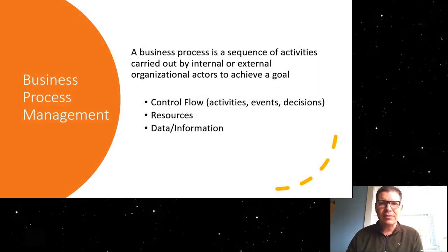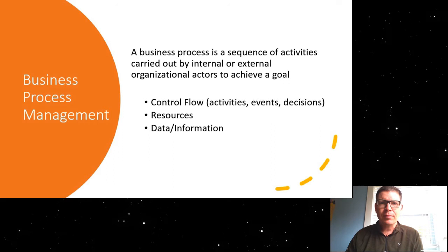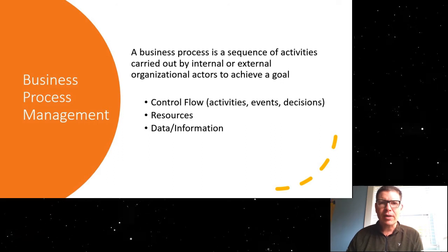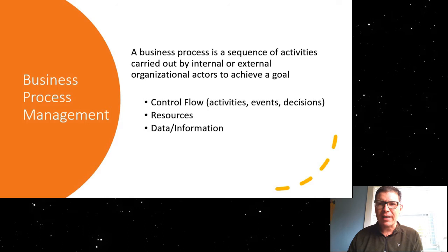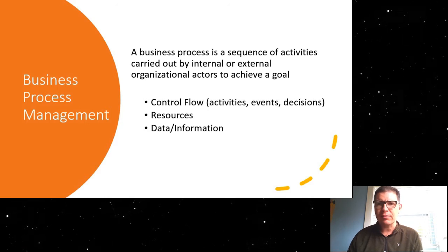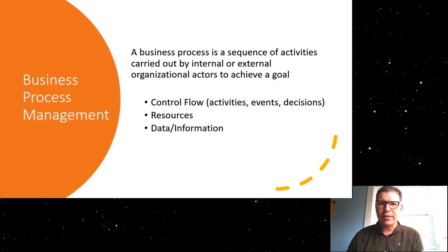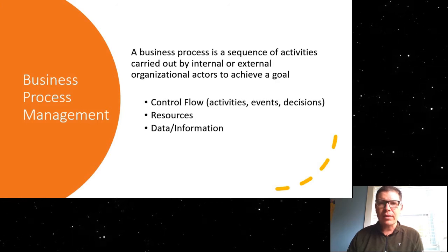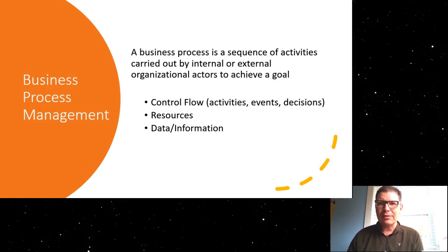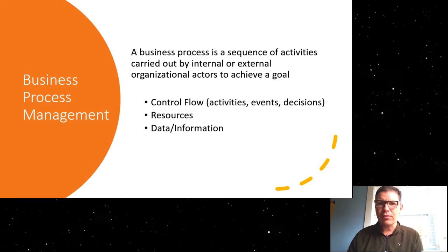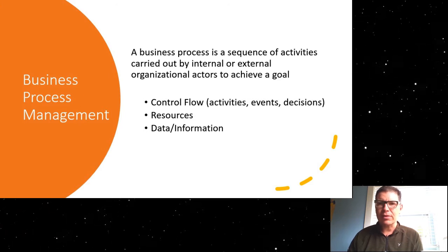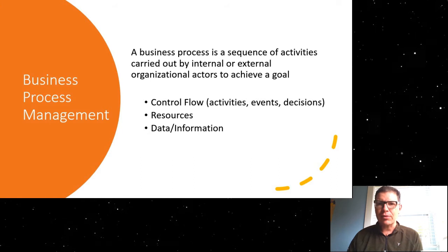Well, a business process is a sequence of activities that are carried out by internal or external actors, and these actors can be human actors, or they can be automated systems, information systems, and they together achieve a goal. When we look at a process, we can look at it from the perspective of the control flow, so this talks about the different activities, the different events that happen in the process, and any decisions that are being made in this process.